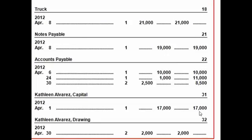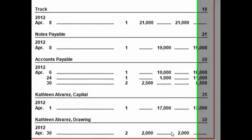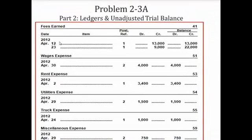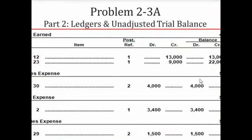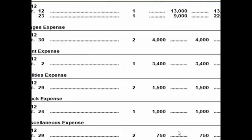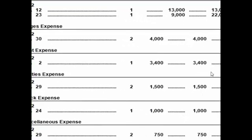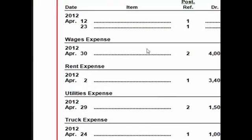Capital has a normal credit balance, and drawing has a normal debit balance. Every time one of these accounts is listed in the journal, we apply it to the ledger. Fees earned is our revenue account and has a normal credit balance. When we journalize fees earned, we record the journal entry here for that particular line and keep a running balance. For April, we earned $22,000 in fees earned, which is basically revenue. Expense accounts have a normal debit balance — every time we record an expense in the journal we apply it to the ledger and keep a running balance, so we know exactly how much we spent on each expense after every transaction.